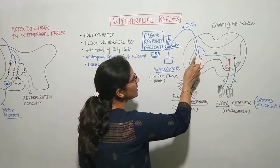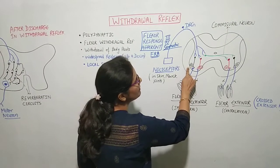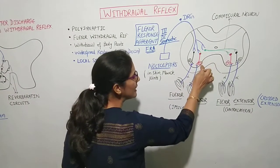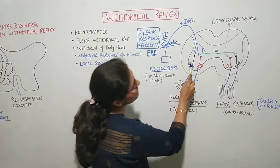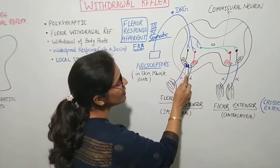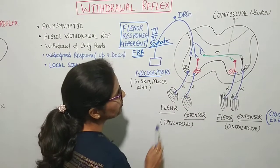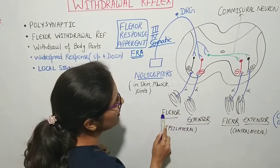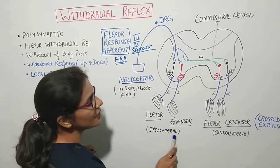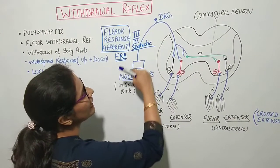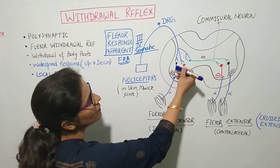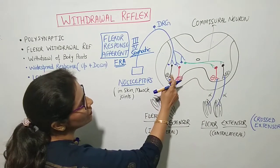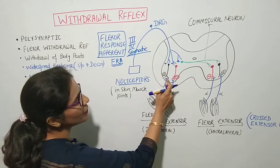When type 3 and type 4 somatic afferents enter, they divide into many branches. Some branches are supplied by activating inter-neurons and some by inhibiting inter-neurons. So there are two types of inter-neurons: excitatory inter-neurons and inhibitory inter-neurons.